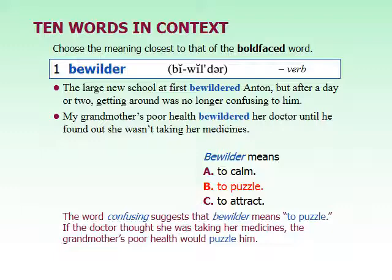In the first example, Anton is bewildered at his new school because he doesn't understand where things are. In the second example, the doctor didn't understand the reason for why the grandmother was doing poorly until he found out. Bewildered is often used to mean confused because someone doesn't understand how things work. Once the person understands, they're no longer bewildered.